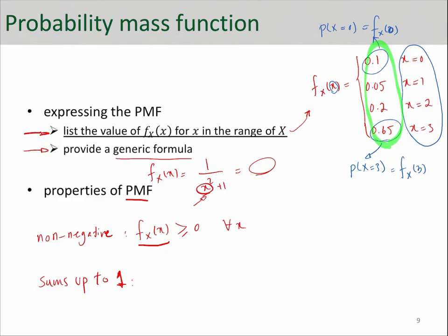Meaning that it has to cover the entire sample space. The probabilities should add up to 100 percent. Or mathematically, you would say summation over x of f_X(x) equals 1. So these two are the main characteristics or properties of a PMF function. If you want to check whether a PMF function is valid or not, you've got to check these two.